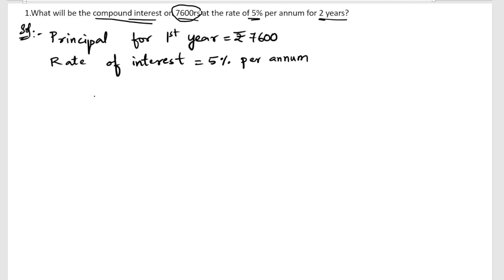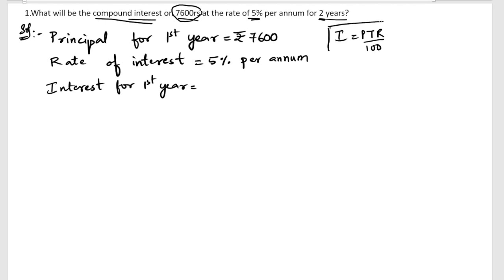First we will find out the interest for the first year. We know the interest formula: I = PTR / 100. So I equals P, which is rupees 7600, into T — for the first year, time is 1 — into R, the rate of interest, that is 5%, divided by 100.